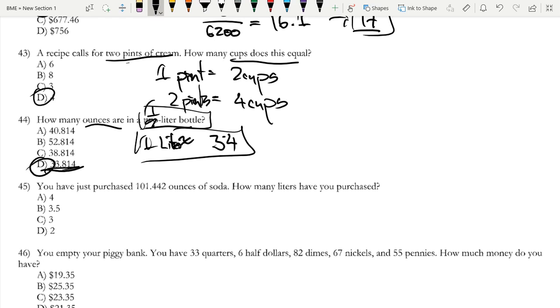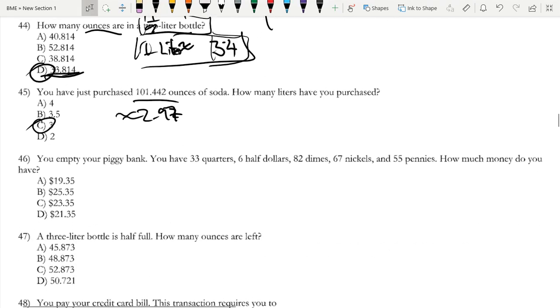Let's just round that to 101. So 101 times 34. You really want to save time on this test. Sorry, not times 34. One liter is 34 ounces. So you would have to do 101 divided by 34, not times 34. And that is approximately 2.97. And again, that would be 3 because 101.442. Now, question 46.